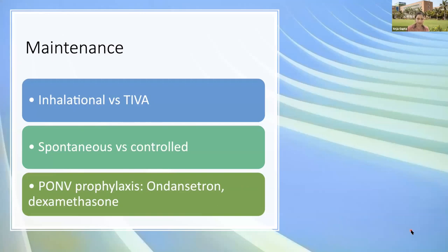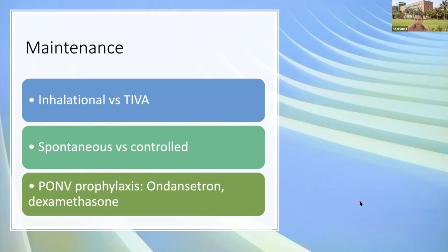Maintenance can be TIVA or inhalational, but TIVA has the advantage of reduced incidence of PONV, which is a common complaint after adenotonsillectomy, and provides smooth emergence. Ventilation can be spontaneous or controlled — spontaneous ventilation is generally used only with LMA, while controlled ventilation is preferred when an endotracheal tube is in situ. PONV prophylaxis is an important aspect using ondansetron and dexamethasone. Multimodal analgesia is provided — dexamethasone decreases PONV and also provides a component of analgesia; acetaminophen is also used.